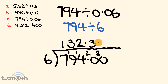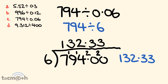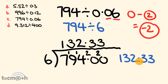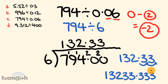This pattern continues — 6 goes into 20 three times, and this repeats indefinitely, giving us 3 recurring. So our interim answer is 132.33 repeating. Now for the decimal placement: 794 has 0 decimal places, and we subtract the 2 decimal places from 0.06, giving 0 minus 2 equals negative 2. That means we move the decimal 2 places to the right, giving us 13,233.333 recurring as our answer.